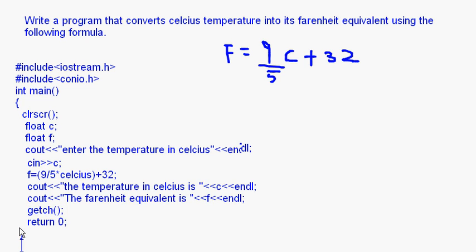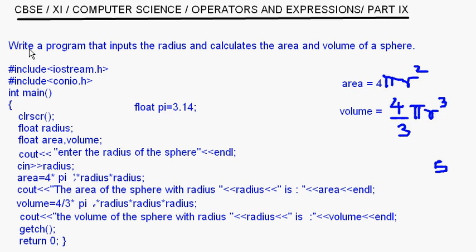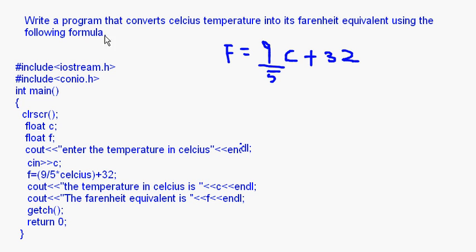So these are two simple programs using arithmetic operators — first, finding the area and volume of a sphere, and second, converting Celsius to Fahrenheit. I hope you have understood both programs. With this I come to the end of this session on operators and expressions. Bye.